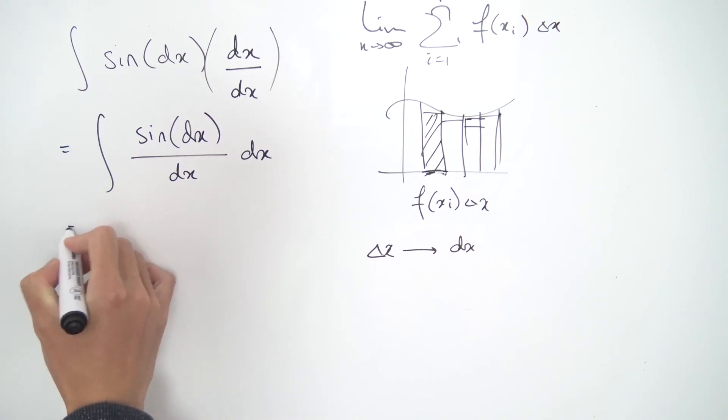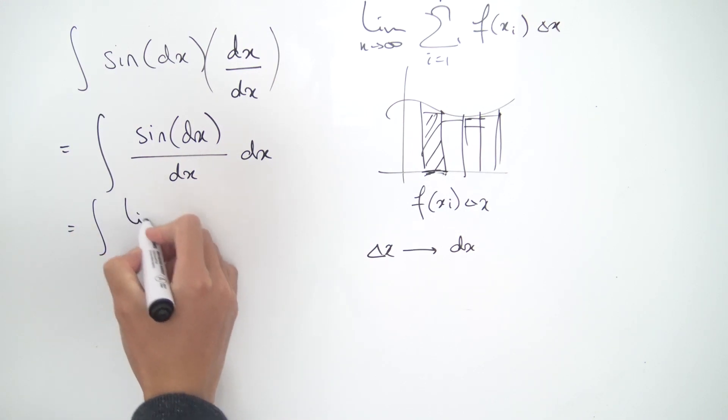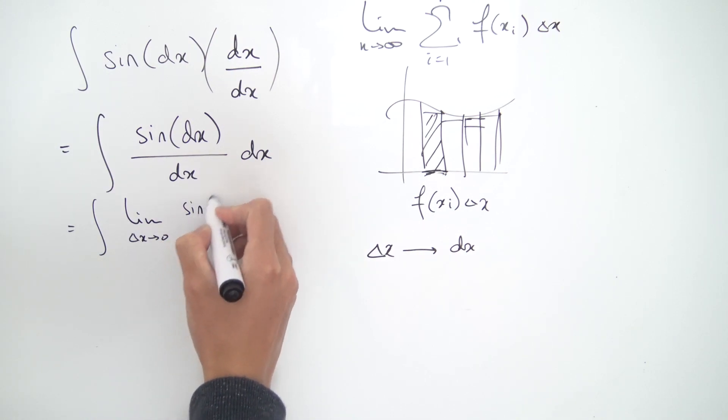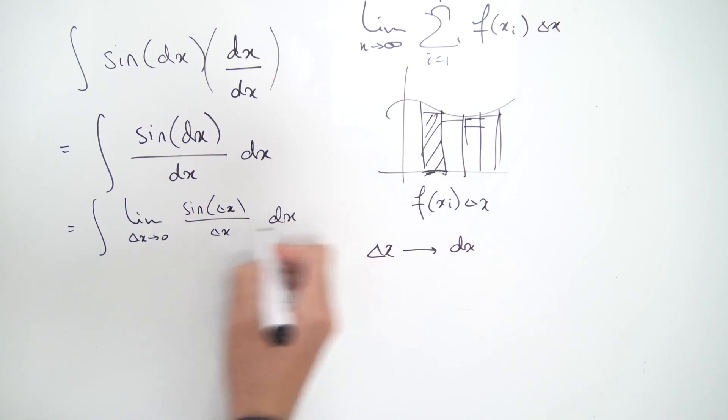Now we can just take a look at this integrand and interpret it as a limit, because this is now the integral of the limit as delta x approaches zero of sine of delta x divided by delta x, dx. So this is all in parentheses. And look at this—this is a limit of sine of something over something as that something approaches zero.